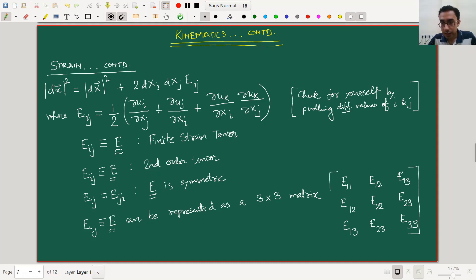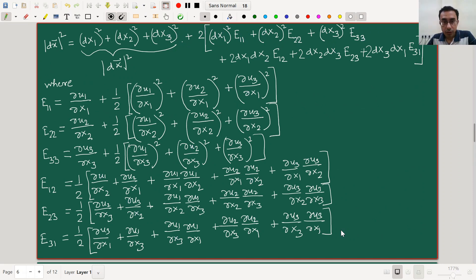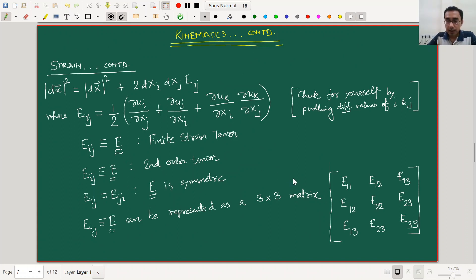So you see that the six components that we had written here, these six components that are present in the previous slide, they are captured within this matrix. You have actually six independent components here: 1, 2, 3, 4, 5 and 6.